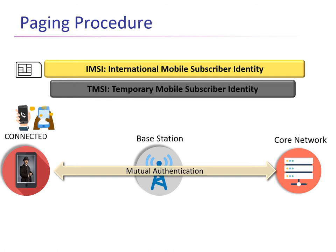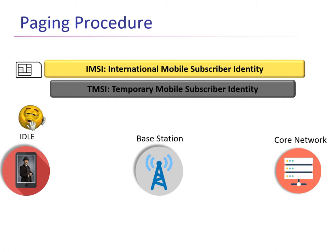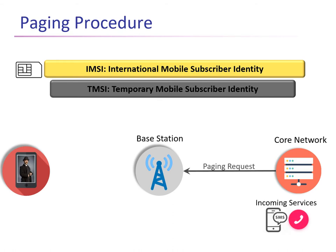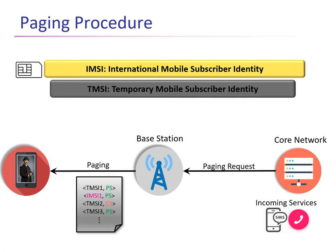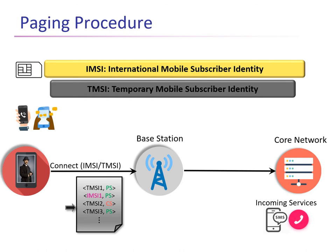After a period of inactivity, the cellular device goes into an idle phase where it doesn't repeatedly check for incoming transmissions from the base station. This is done to prevent battery consumption. So what happens in case there is an incoming service like an SMS or a call? The core network sends a paging request to the base station, which creates a paging message with all the TMZs and IMZs of cellular devices that have a pending incoming service. These cellular devices periodically check these paging messages and, if they find their TMZ or IMZ number inside, they initiate the connection back to the core network to receive that service.